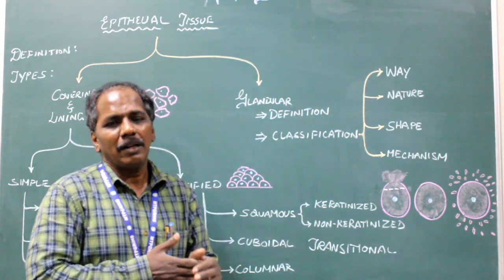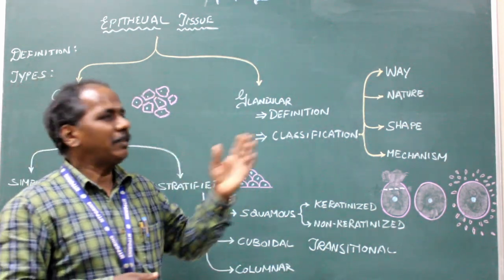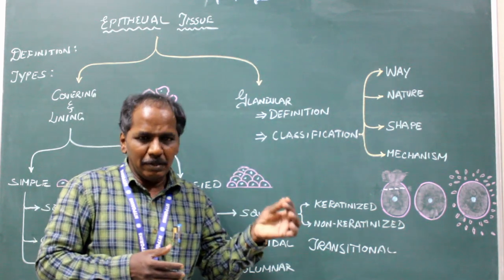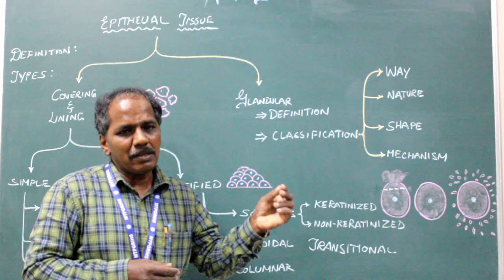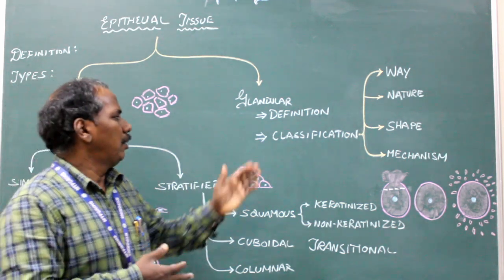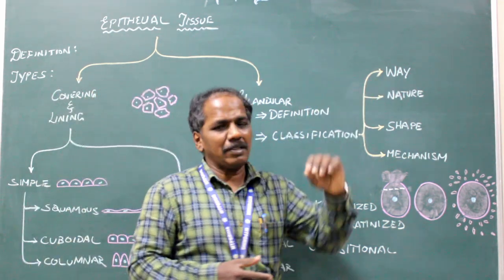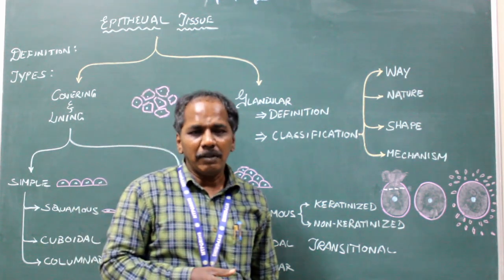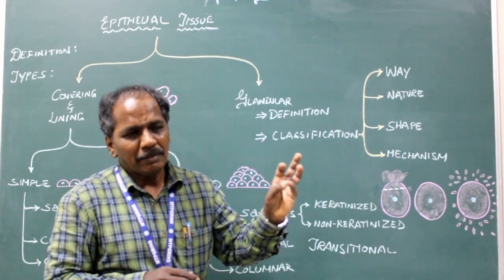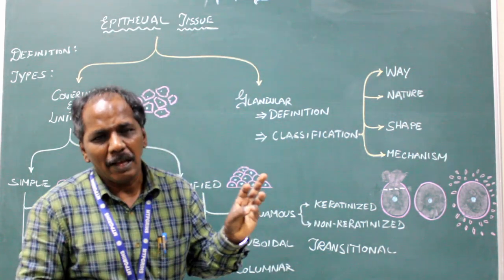Glandular epithelium or glands: glands are nothing but outgrowth of epithelial tissue, or in other words, epithelial cells specialized in performing the function of secretion. Classification of glands: glands may be classified depending upon the way of secretion. If the gland contains ducts, it is an exocrine gland — example: parotid salivary gland. If there is an absence of ducts, it is an endocrine gland — examples: pituitary and thyroid.